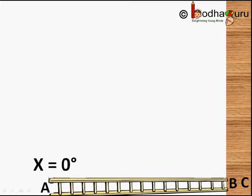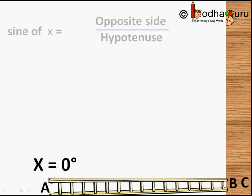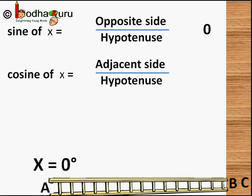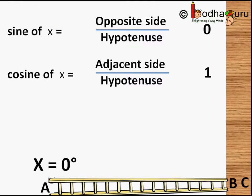Now let's say suddenly the ladder fell down, which means x is 0 degrees now, and so is the opposite side BC, which is also 0, because the ladder is not resting against the wall anymore. So what will be the values of the various trigonometric ratios? Sin of 0 degrees will be opposite side divided by hypotenuse, which is equal to 0 by hypotenuse. The hypotenuse is the ladder size, so 0 divided by ladder size equals 0. Cos of 0 degrees is equal to adjacent side AB by hypotenuse AC — adjacent side AB and hypotenuse AC are the same, which is the ladder size.